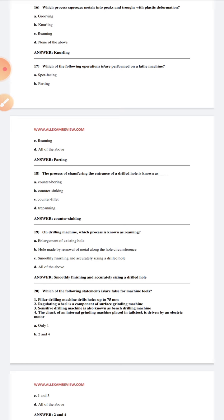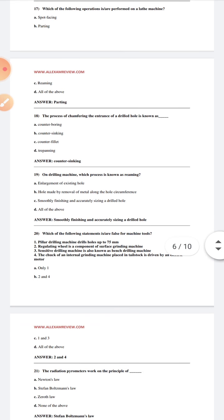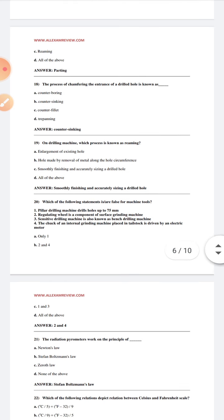Which of the following statement is false for machine tools? Regulating wheel is a component of surface grinding machine - this is incorrect, it's part of internal grinding machine. Placed in the tail stock is driven by the electric motor - also incorrect. Pillar drilling machine drills holes up to 75mm - correct. Sensitivity drilling machine is also known as bench drilling machine - correct.